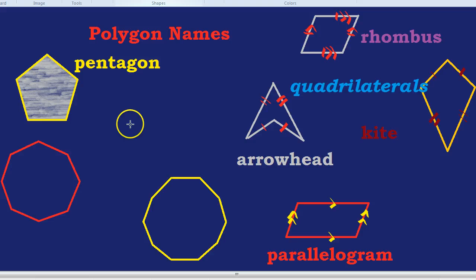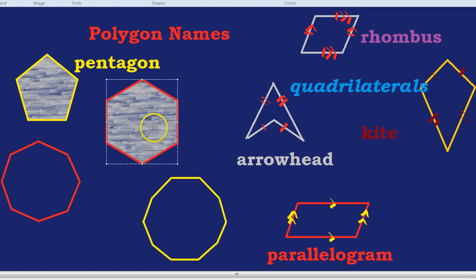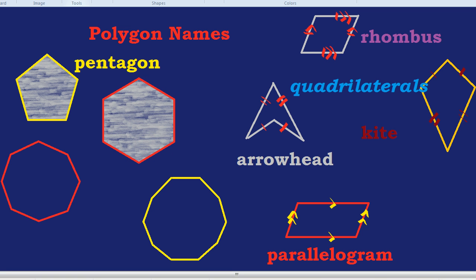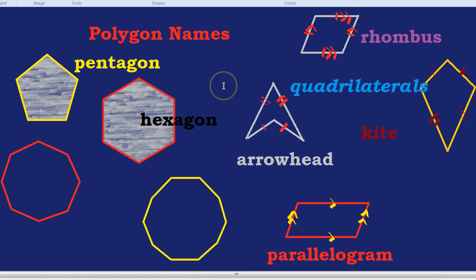What about six sides? That would be, let's do it in red, that would be a hexagon. This would be a hexagon. Let's do it in a slightly different color. There we go. Hexagon. Again, if all the sides were equal length, it would be a regular hexagon. But any side with six sides is called a hexagon.